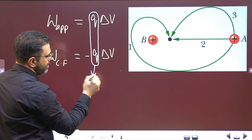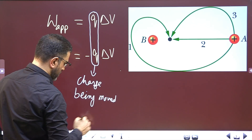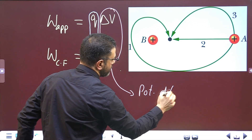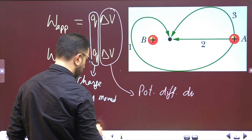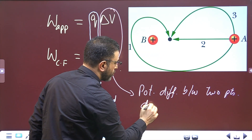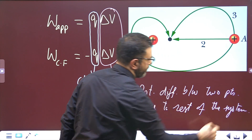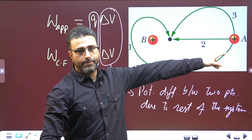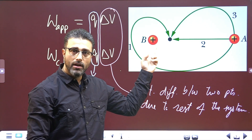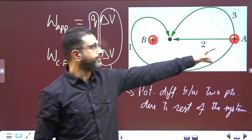Here, q is the charge that is to be moved, and delta V is the potential difference between two points due to the rest of the system. In this case, the charge to be moved is sphere A, so we have q_A. The potential difference due to the rest of the system is due to B, so we consider the potential difference due to B.